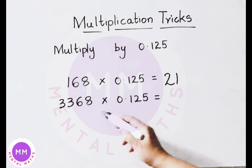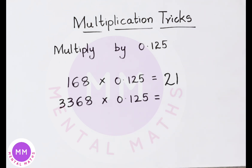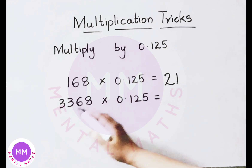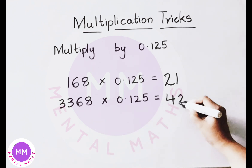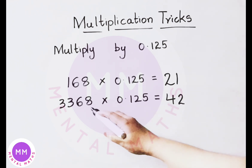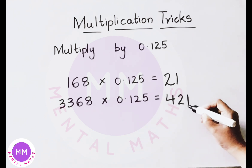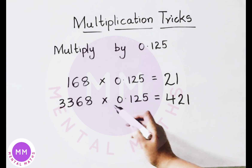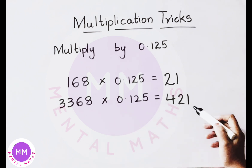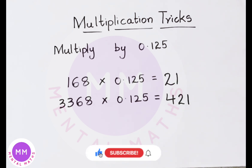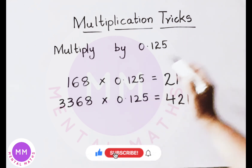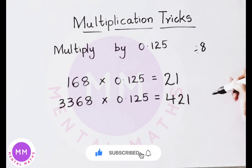See now the next example: 3368 multiplied by 0.125. 8 into 8 gives 4 remainder 32, you get a carry of 1, so the number becomes 16. 8 into 16 is 2 times, then 8 into 8 is 1. So 3368 multiplied by 0.125 equals 421. Whenever you multiply any number by 0.125, just divide the given number by 8 and you get the result.